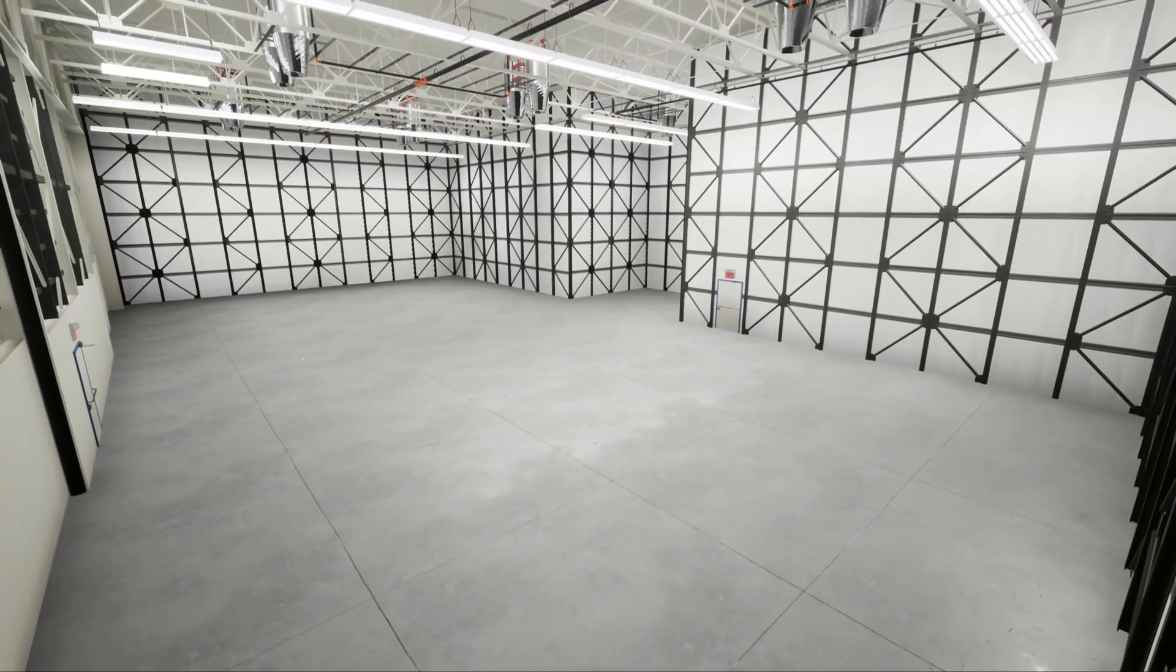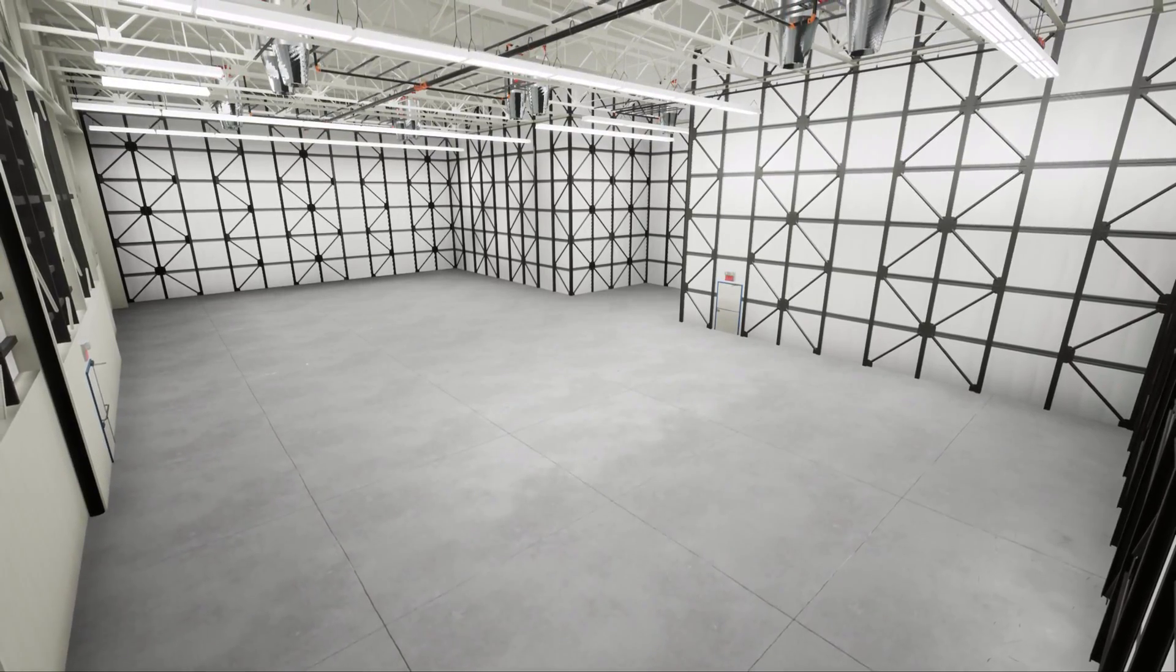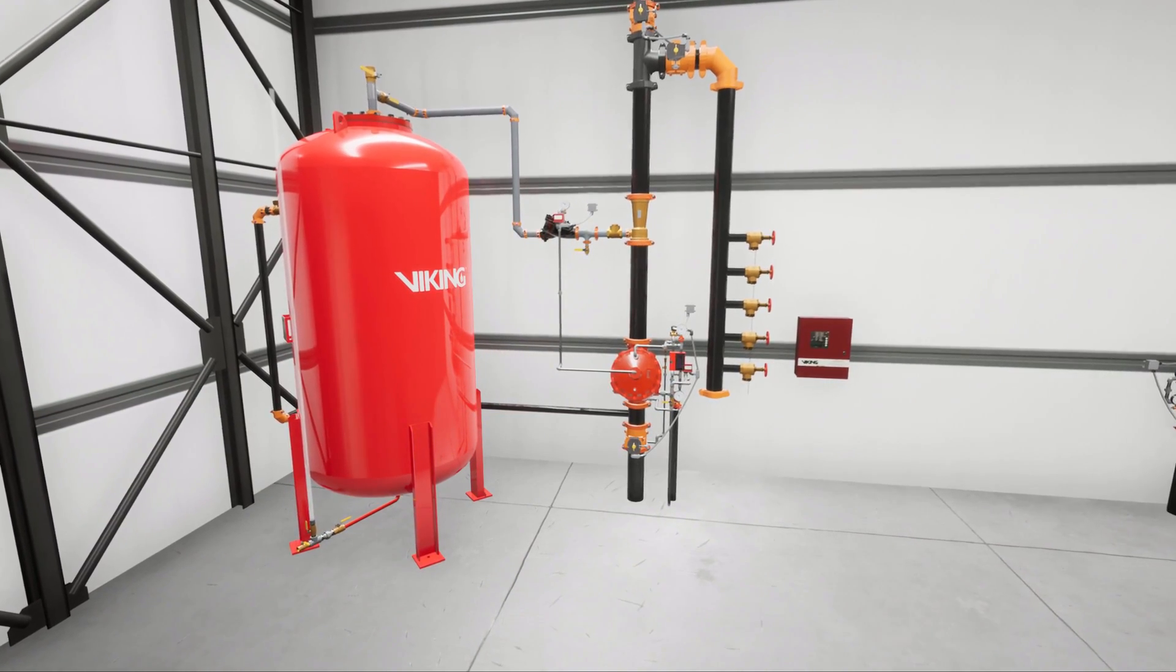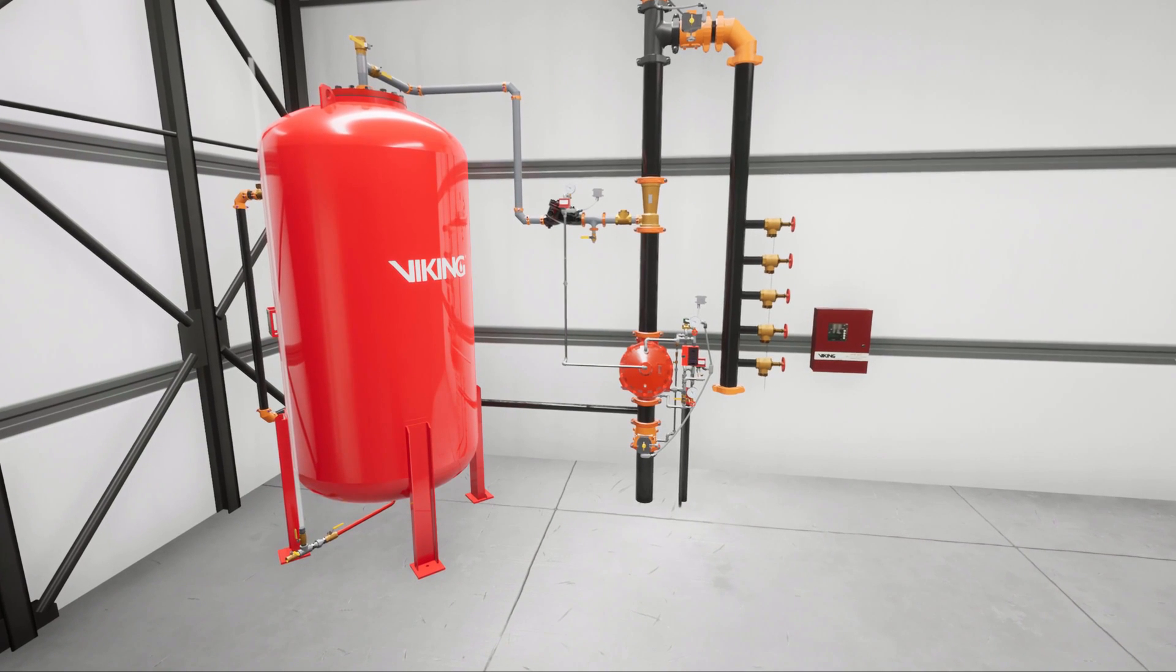In this scenario, we are looking at a Group 2 aircraft hangar. The hangar is protected with an electric-release deluge foam system supplied by a bladder tank.